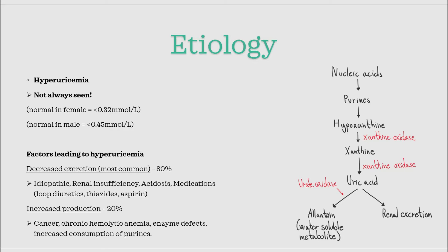The second group, causing about 1 out of 5 cases, is increased production of uric acid. There are many reasons for increased production, but the two most important ones to remember are that it can be due to different cancers and from increased consumption of purines. Other causes, like enzyme defects, can also be the case, but they are more rare.